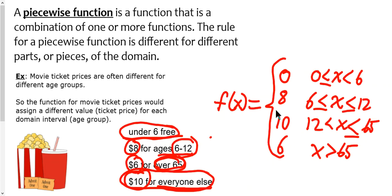If you wanted to evaluate this piecewise function, let's say you wanted to evaluate f of ten, which is really just asking what is the cost for a ten-year-old. You evaluate it by finding the correct interval, finding the correct domain. So ten is in this domain right here, it's between six and twelve. The output would be the value of the function, which is eight. So in this piecewise function, f of ten is eight. In other words, a ten-year-old person will pay eight dollars.